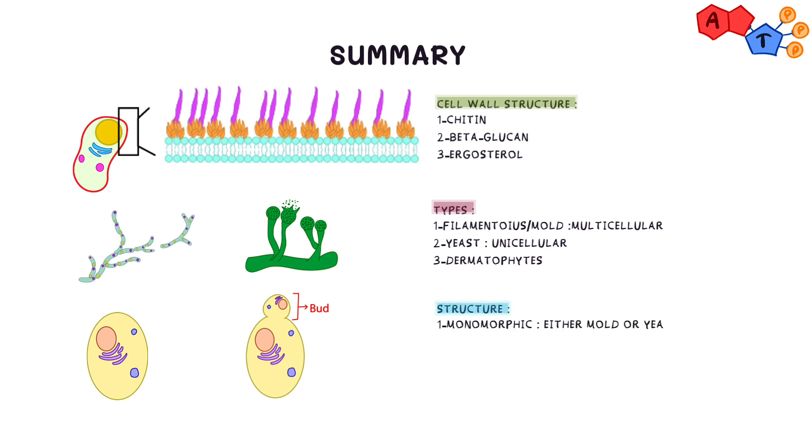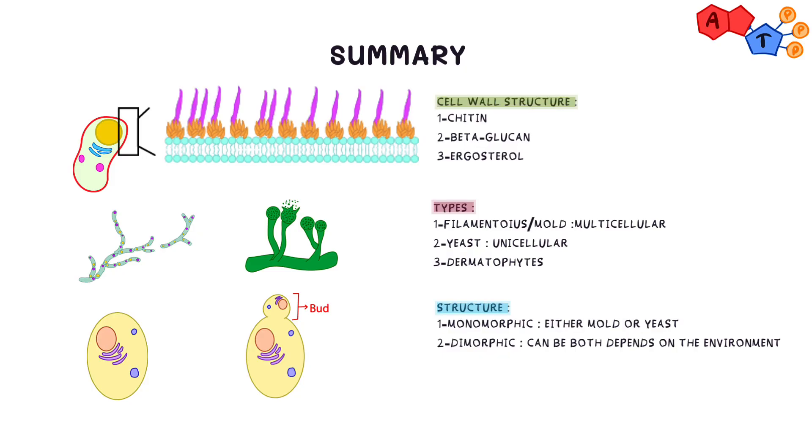Yeasts reproduce asexually through budding while molds mainly reproduce via spores. We also mentioned that fungi can either exist in one form throughout its lifespan, which is known as monomorphic fungi, or take multiple forms throughout their lifespan, and this is known as dimorphic.